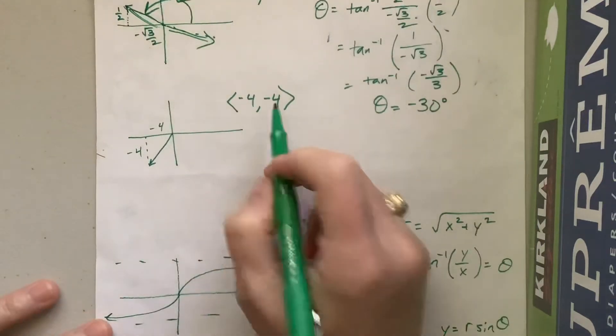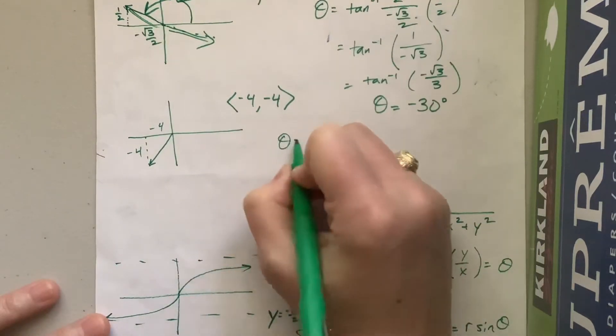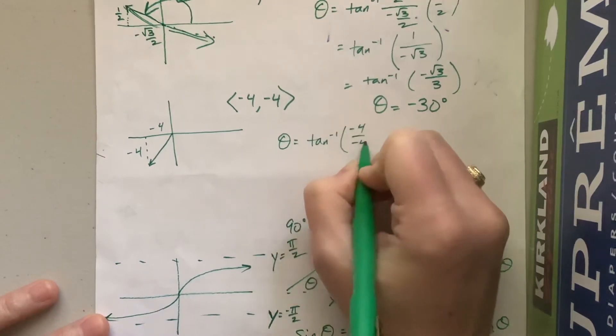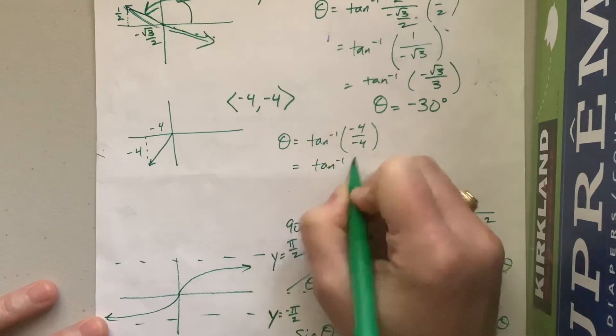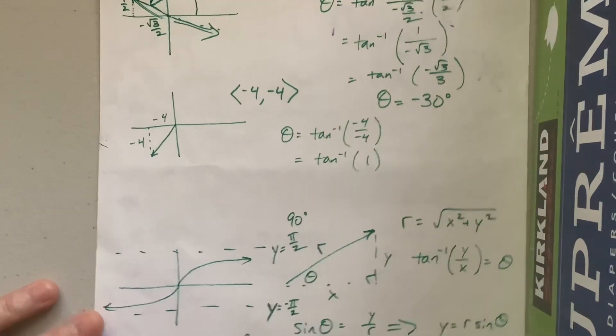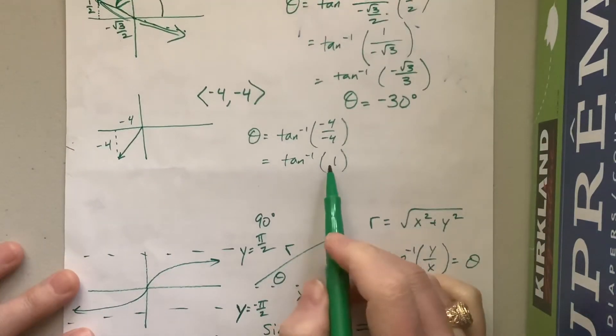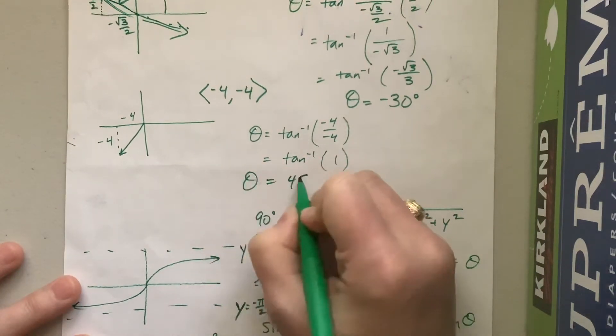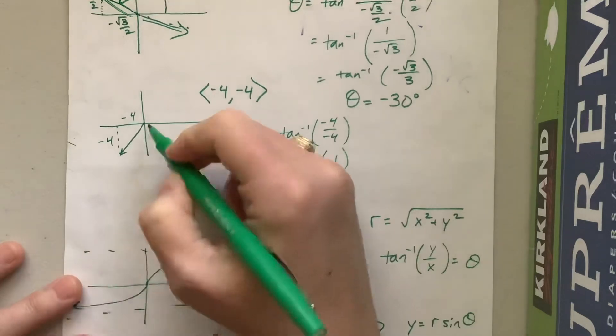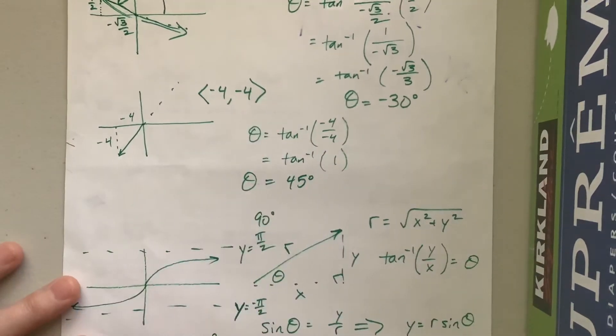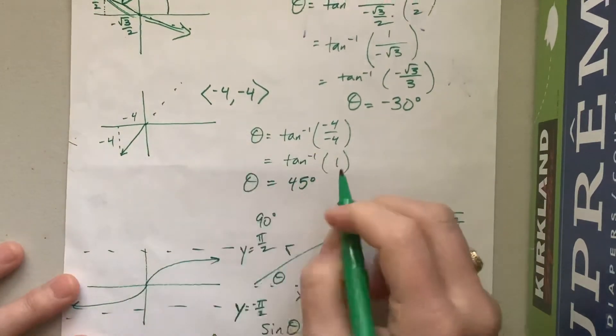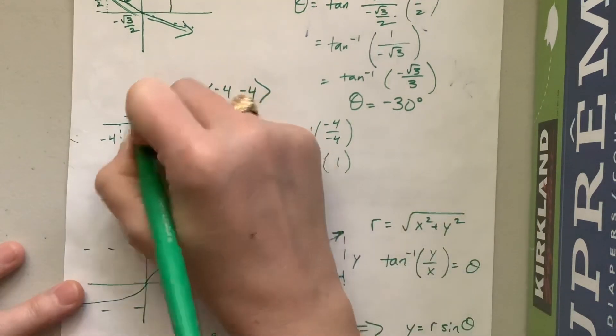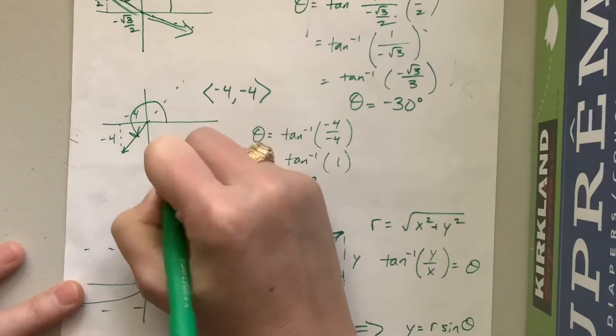Okay, likewise, if we had this one where it was negative and a negative, when we do this, theta is equal to the inverse tangent of negative 4 over negative 4. Well, that's just the inverse tangent of a positive 1. Well, think back to your unit circle. That's pi over 4, or 45 degrees. Then we're saying, okay, theta is equal to 45 degrees, but you notice it's not. 45 degrees would be up here. We've gone in the opposite direction of that, so we have to add 180. So that is 225. So this angle is 225 degrees.